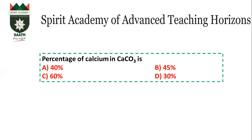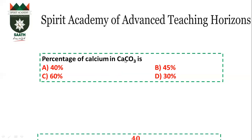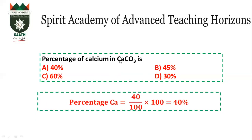So, the percentage of calcium in calcium carbonate. The percentage is the mass of the element divided by the total mass, multiplied by 100. Calcium mass is 40, carbon is 12, and 3 oxygens give 48. Total mass is 100. So 40 divided by 100, into 100 — the answer will be 40%.